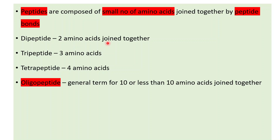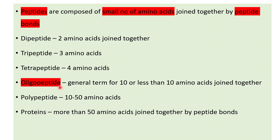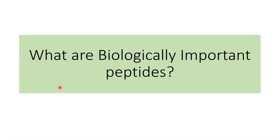The term oligopeptide is a general term reserved for 10 or fewer amino acids joined together by peptide bonds. Polypeptide refers to 10 to 50 amino acids joined together by peptide bonds, and proteins are when more than 50 amino acids are joined together by peptide bonds.